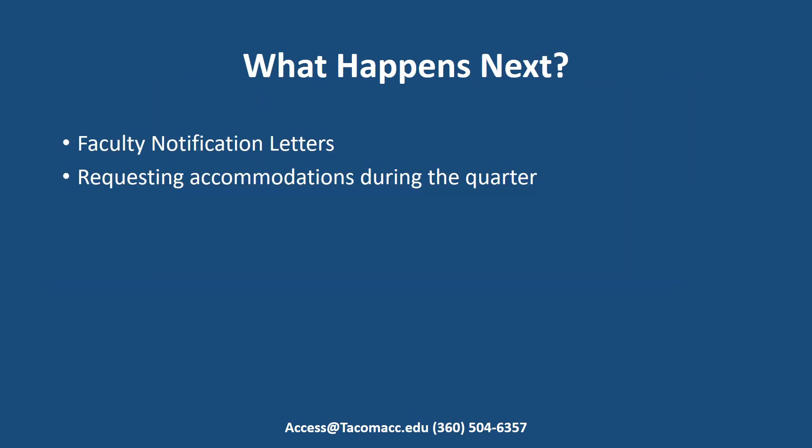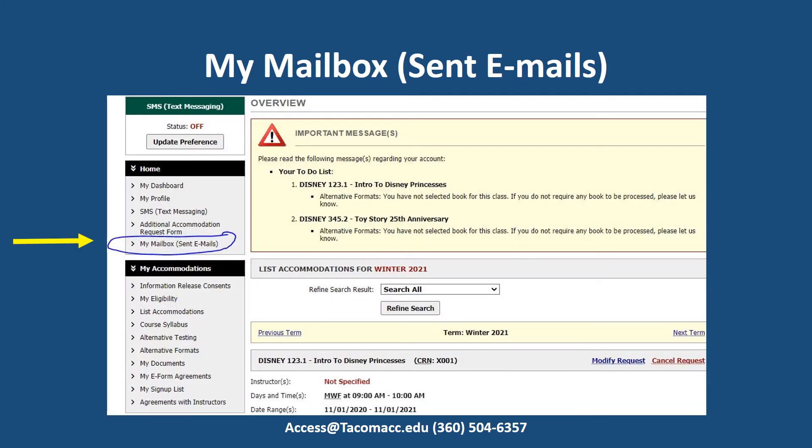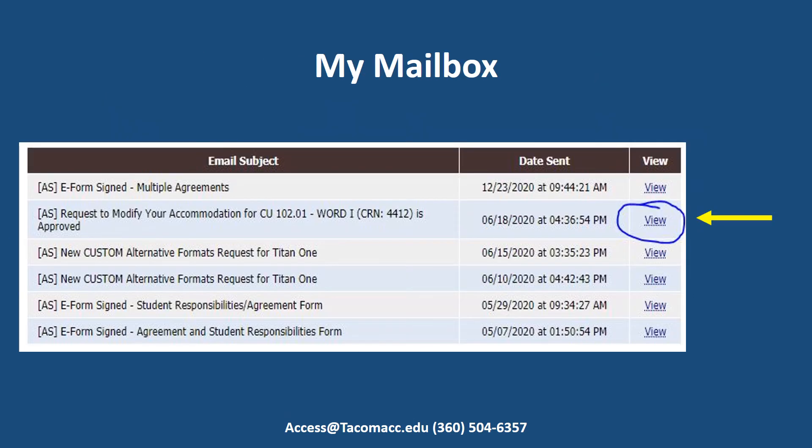What happens next? Access Services staff will review your submitted accommodation request. Faculty notification letters will be sent to faculty and yourself via email a week before classes start. Note: if you are requesting accommodations during the quarter, it will typically take three to seven business days before your notification letter is sent out. You can find your faculty notification letter under 'My Mailbox,' in the 'Sent Email' tab. All faculty notification letters can be found by selecting the 'View' tab.